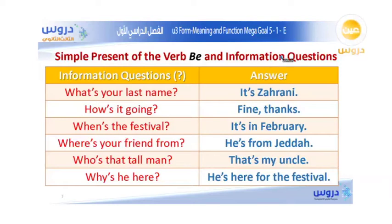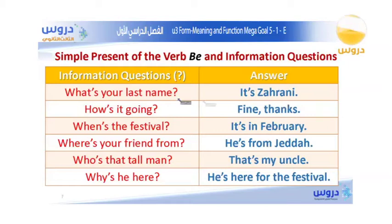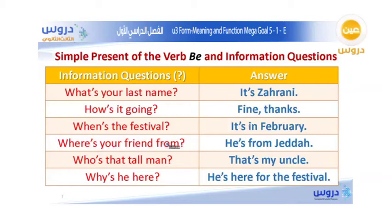Here is another example with a different information question starting with 'how': How is it going? — Fine, thanks. When is the festival? — It is in February. Where is your friend from? — He is from Jeddah.